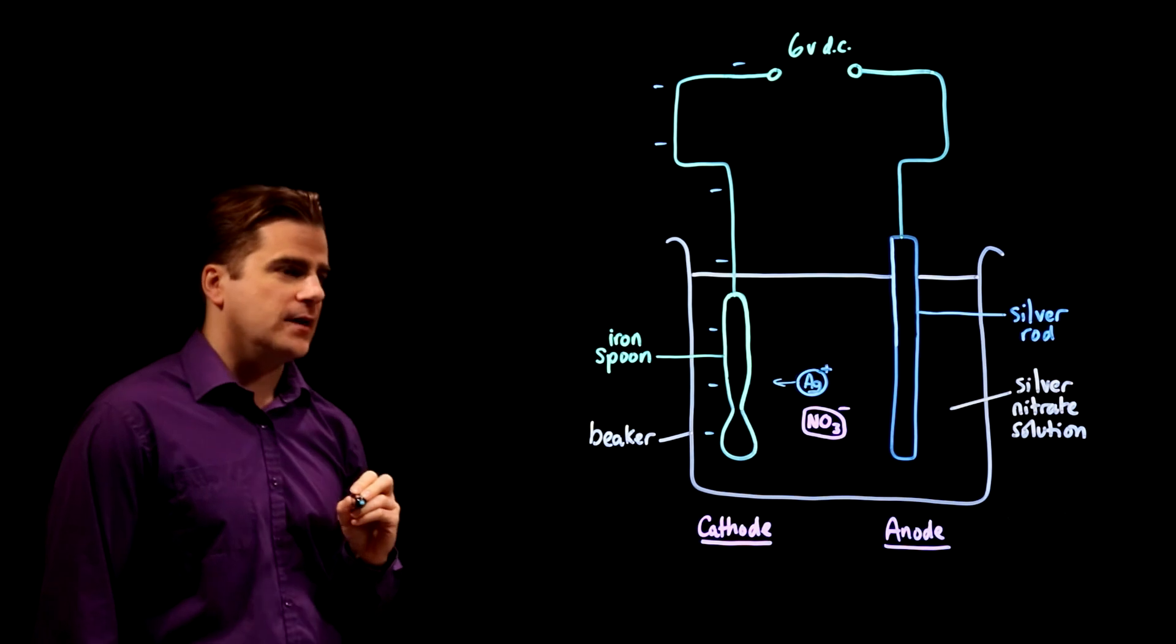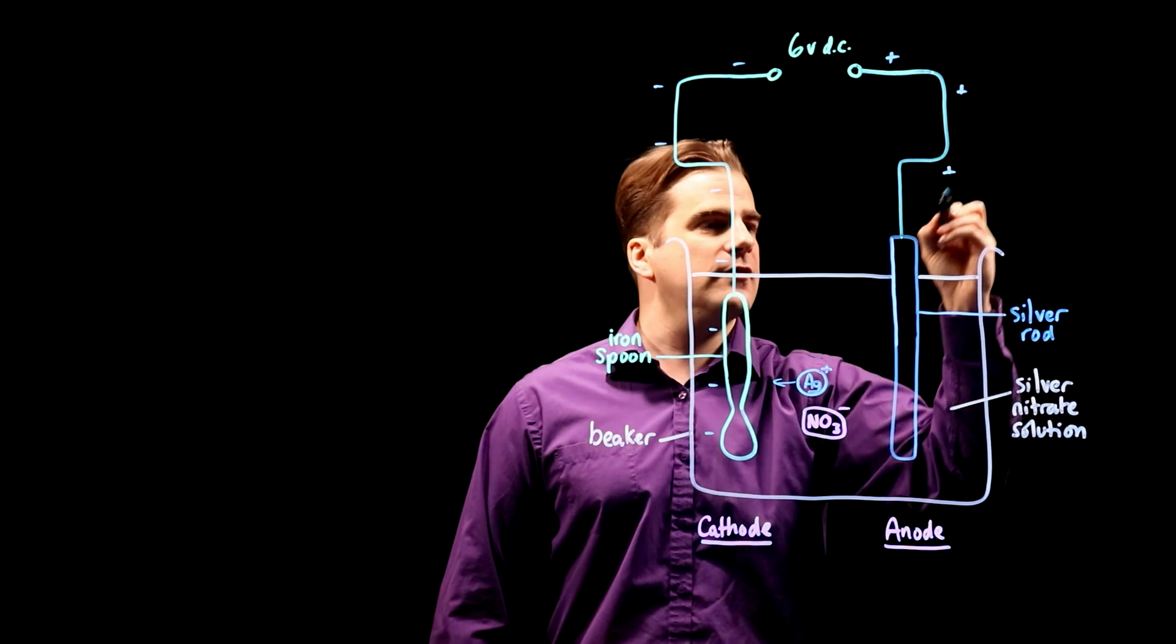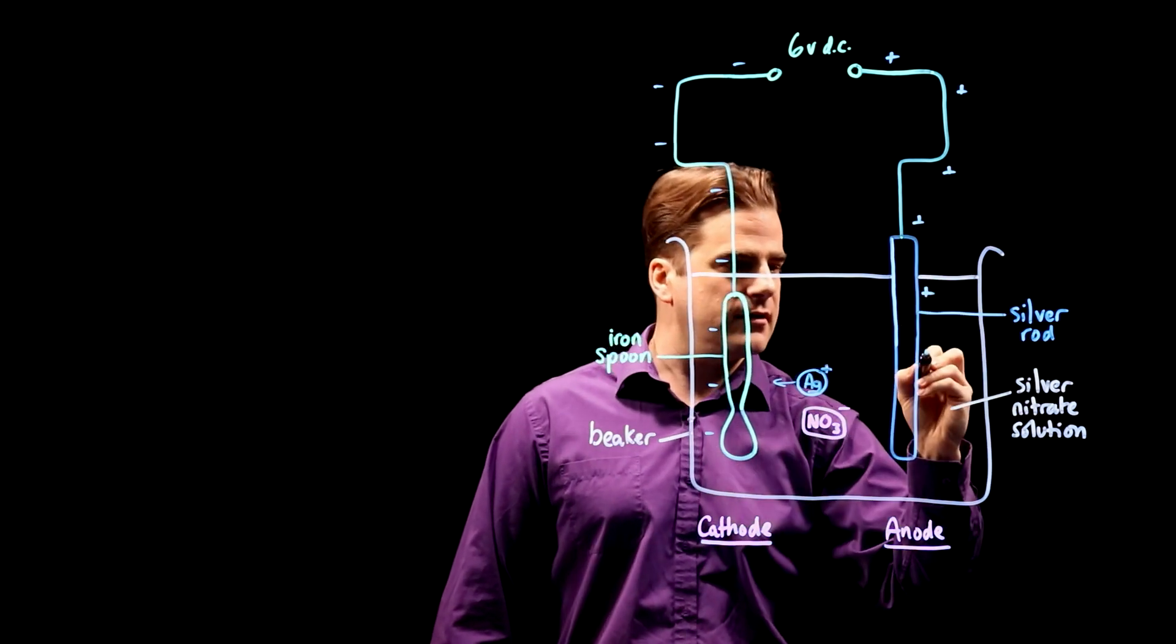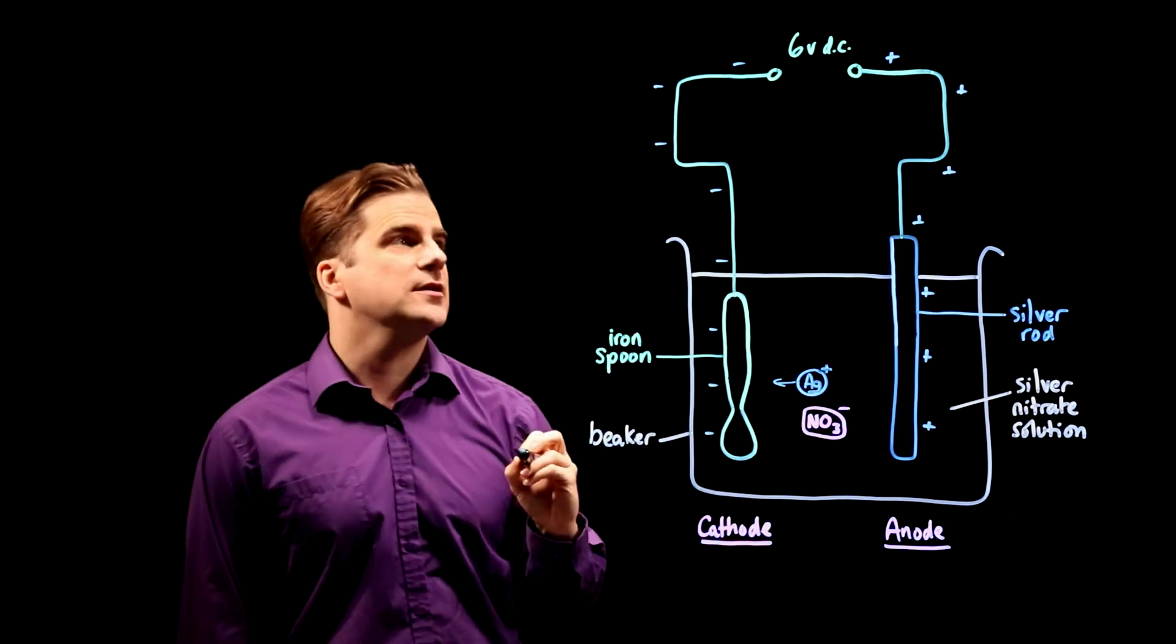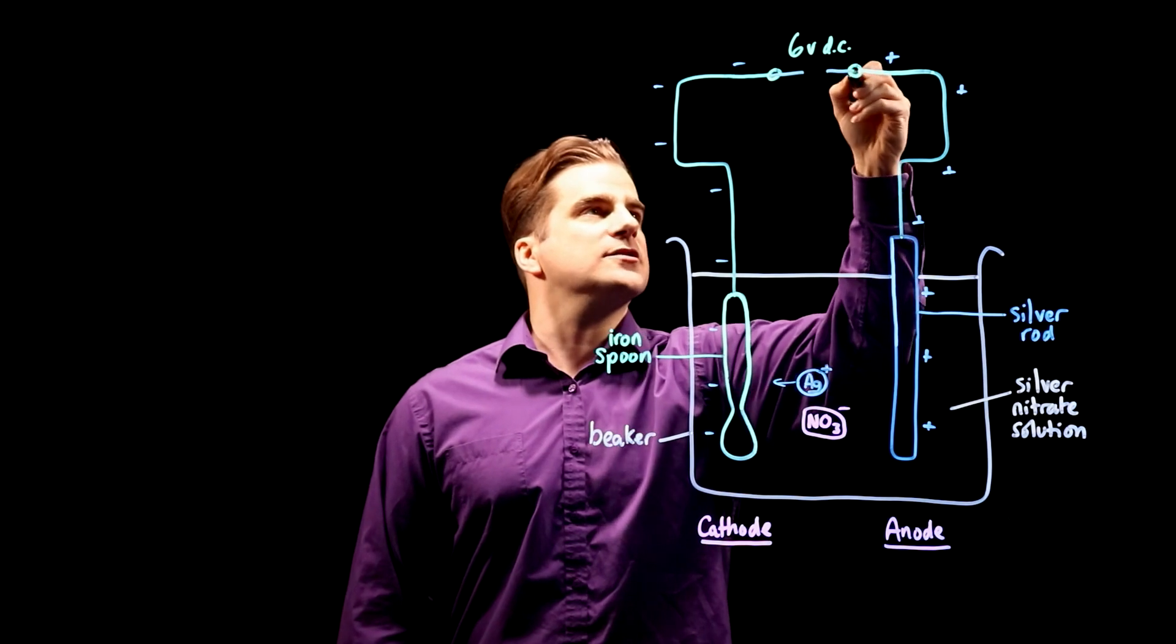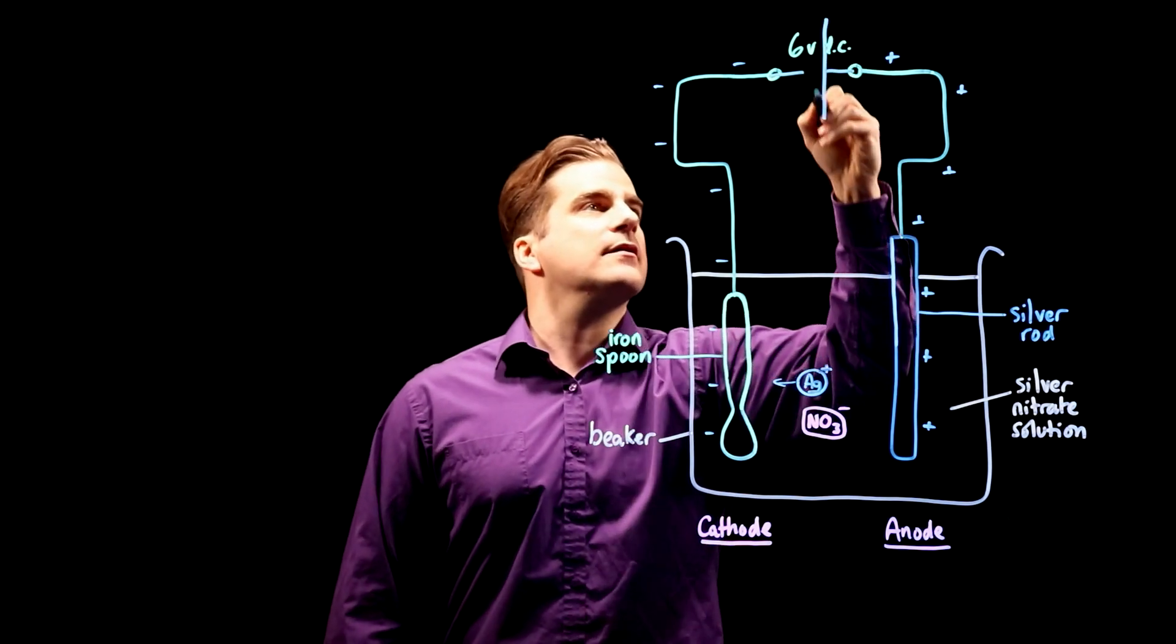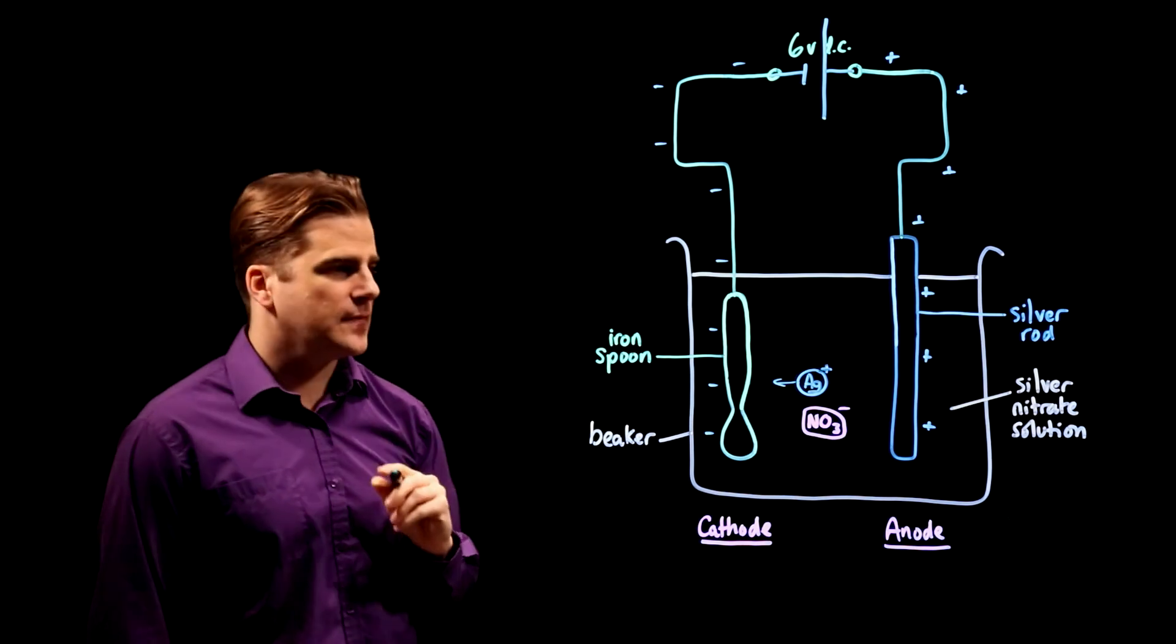So we can deduce that the spoon has to be negative in order to attract the positive metal ion towards it. So therefore if that side is negative this side must be positive. So the silver rod is positively charged which means if we were to draw in the actual cell it would be that way round.